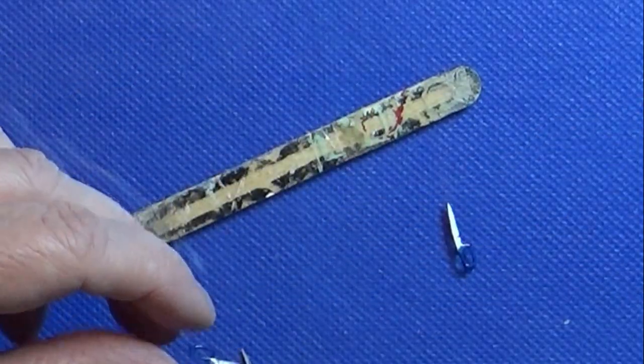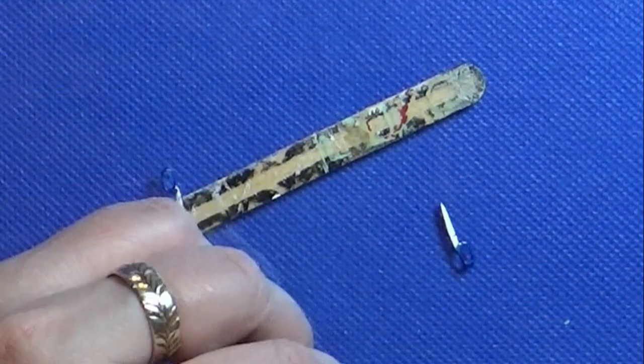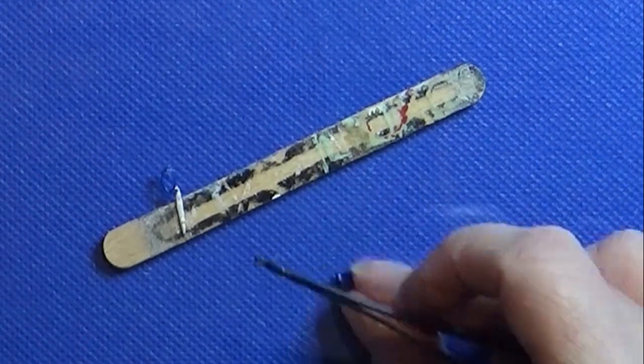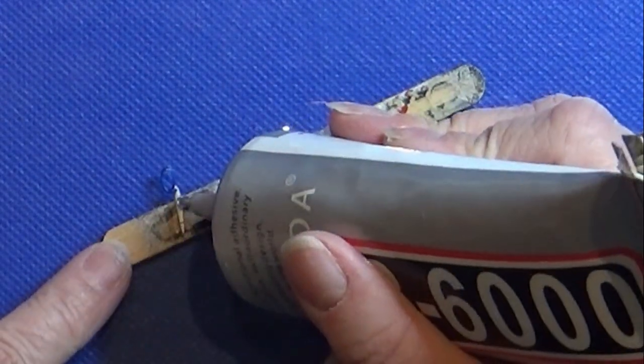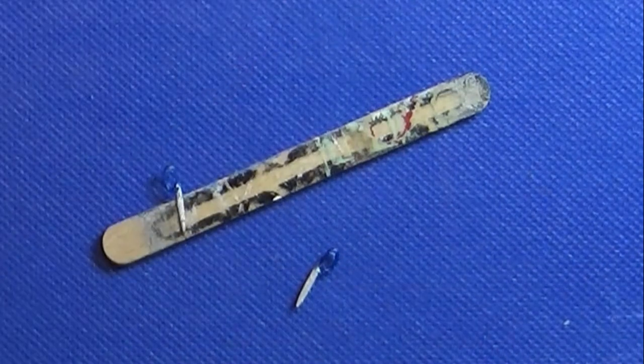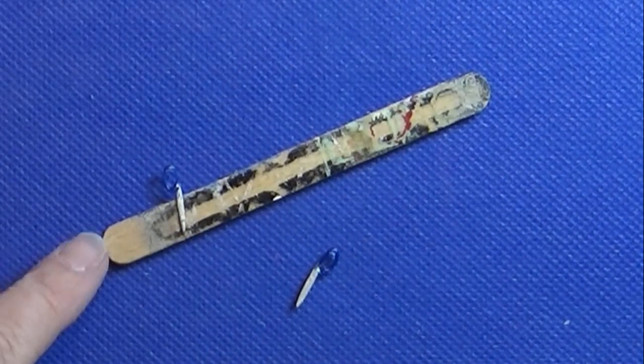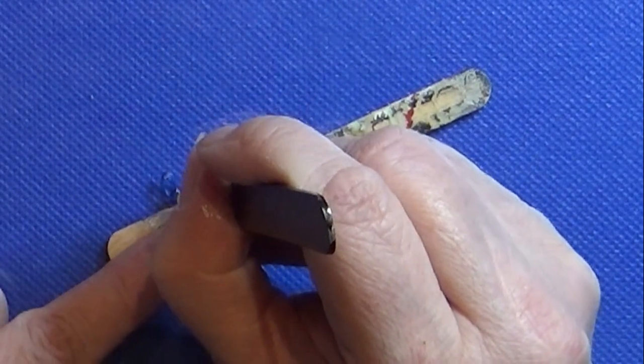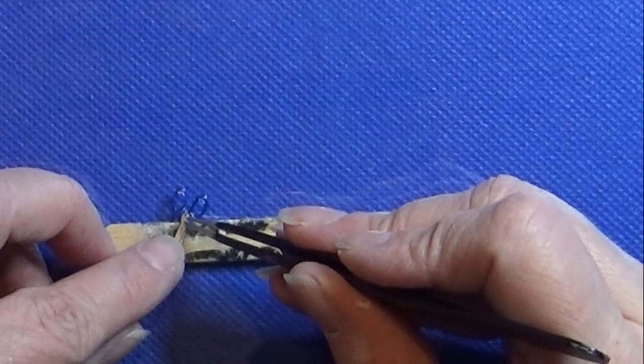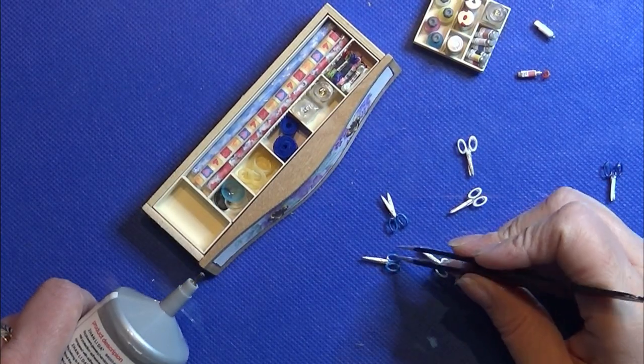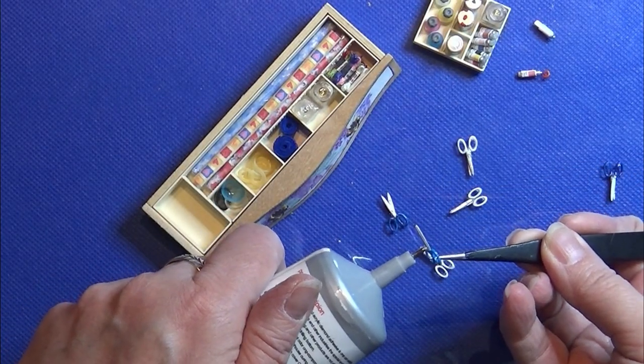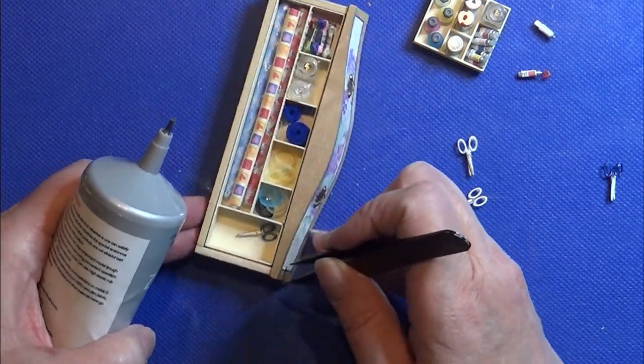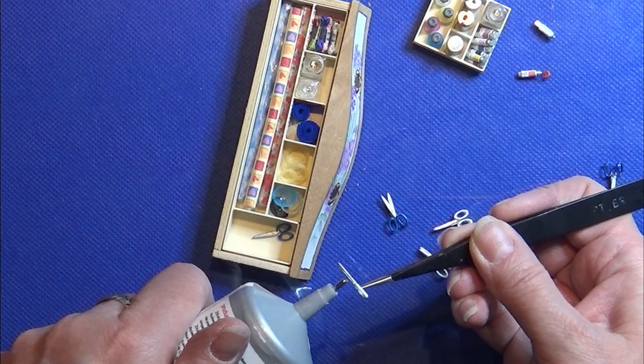Here I'm gluing a scissor together. When the glue has dried, I'm going to glue a few of these into the drawer. And now it's all ready to go back into the little peek box.